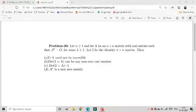Now we will talk about problem number 20. The question is: let n ≥ 1 and let A be an n×n matrix with real entries such that A^k = 0 for some k ≥ 1. Let I be the identity n×n matrix. Then which of the following is or are correct?